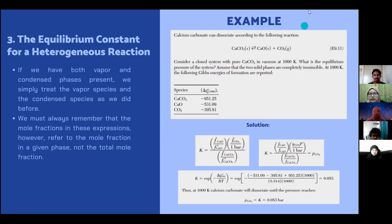Calcium carbonate can dissociate according to the following reaction: CaCO3, which is calcium carbonate, will form CaO, which is calcium oxide plus CO2 carbon dioxide. We consider a closed system with pure CaCO3 in vacuum at 1000 Kelvin. The question is, what is the equilibrium pressure of the system? We can assume that the two solid phases are completely immiscible. At 1000 Kelvin, the following Gibbs energy of formation are reported. For CaCO3, the Gibbs energy given at 1000 Kelvin is negative 951.25. And for calcium oxide, negative 531.09. And for carbon dioxide, negative 395.81.